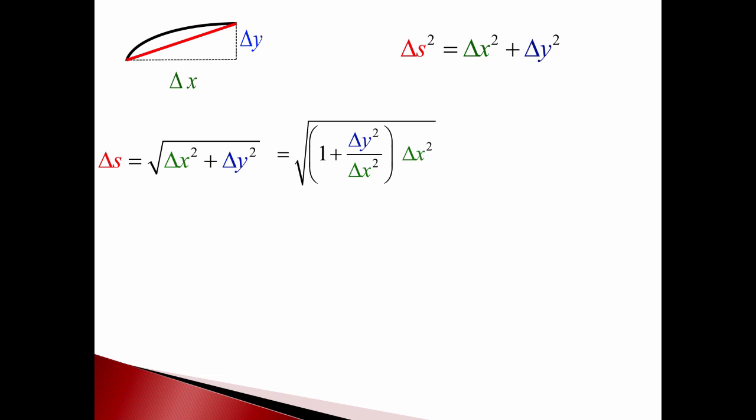If you go from right to left and multiply the delta x squared back through, you see that obviously it's the same answer because it would cancel out with the fraction delta y squared over delta x squared.